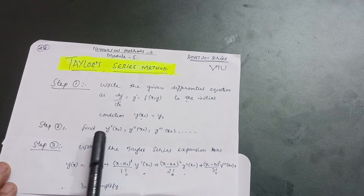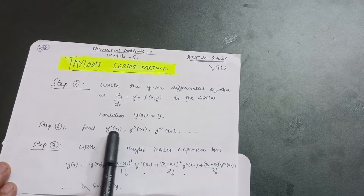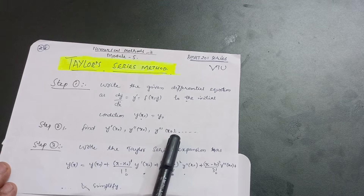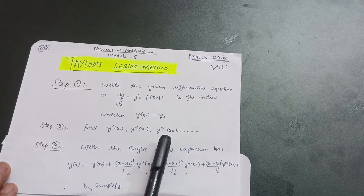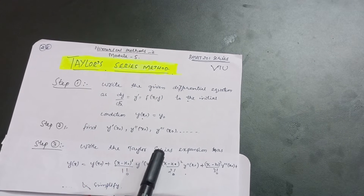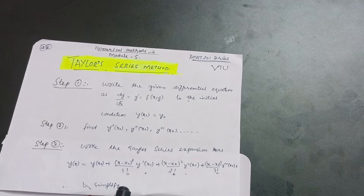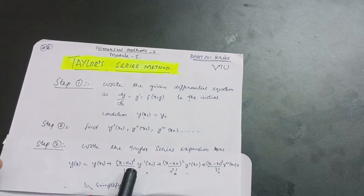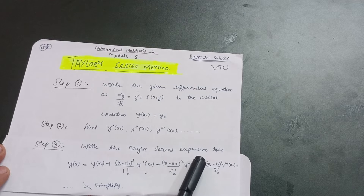Step two: find y dash of x₀ — that is single differentiation; y double dash of x₀ — double differentiation; y triple dash of x₀ — triple differentiation. You don't need to differentiate in this Taylor series method; you only have to put down the values. It is a very simple method — no differentiation required.